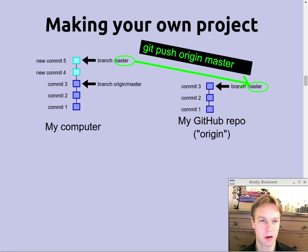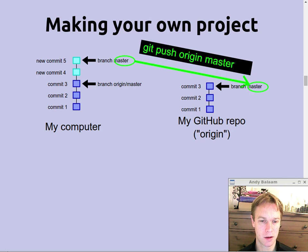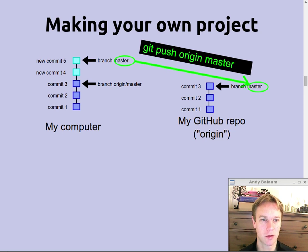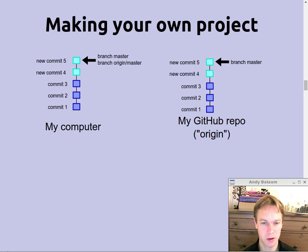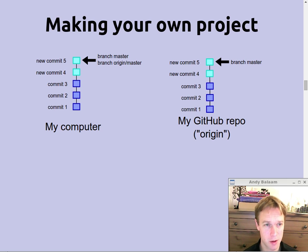You're saying to Git: take the branch I'm currently on and use that to synchronize with the branch called master on the remote called origin. Once you've done git push origin master, the GitHub repository and your local repository agree, so your changes have been pushed up to the public repository. That's pretty simple.